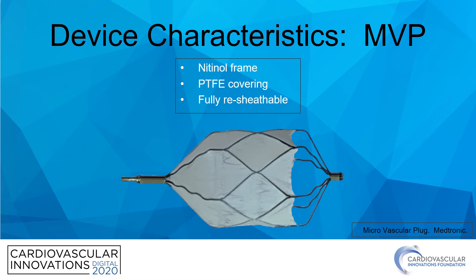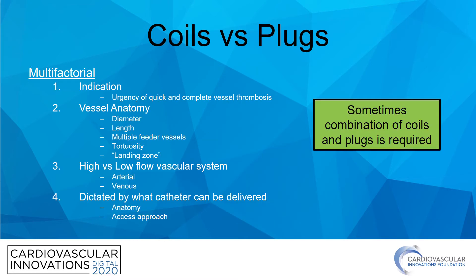Similar to the AVPs, the microvascular plug is fully resheathable should repositioning be required. The decision to use coils versus plugs is multifactorial. Which devices and how many are used will be dictated by how urgently complete vessel thrombosis is needed — for example, a hemorrhage indication may be treated very differently than a hypoxia indication. Vessel anatomy also plays an important role: diameter, length, tortuosity, the presence of multiple feeder vessels, and how good a device landing zone is present.